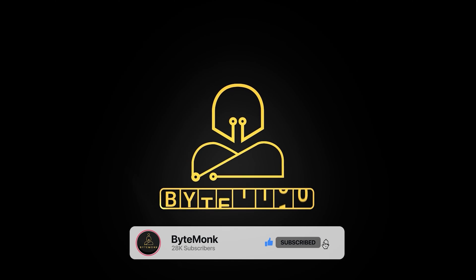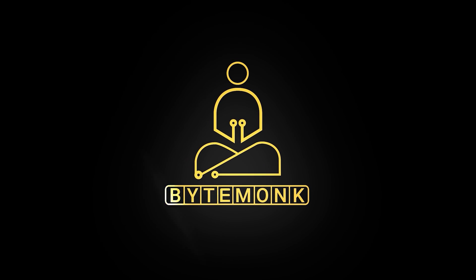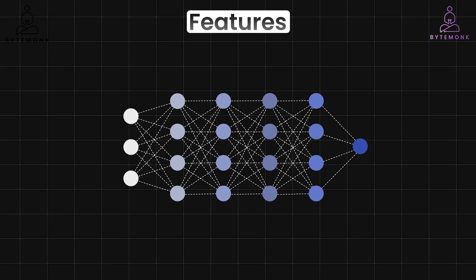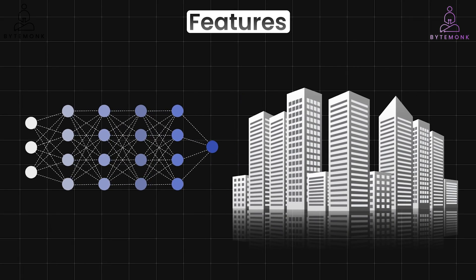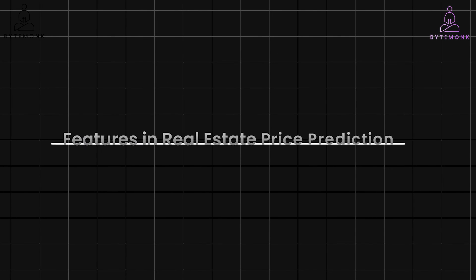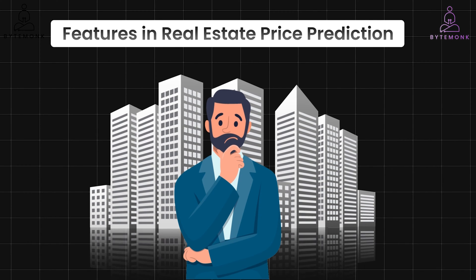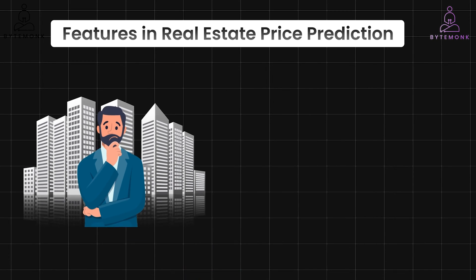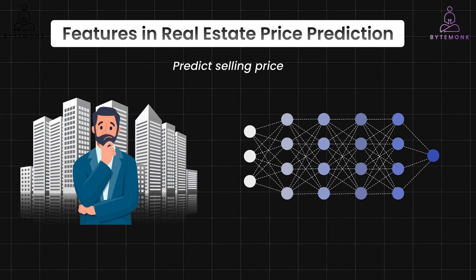Let's get started. Features are the building blocks for training models in machine learning tasks, and especially important for supervised learning like predicting real estate prices, as we saw in the previous video. Let's revisit the real estate example but this time focusing on features. Imagine you are a data scientist working for a real estate company and you want to build a model to predict the selling price of houses.